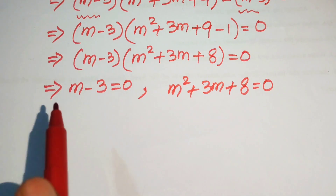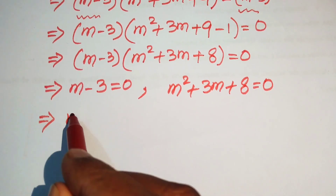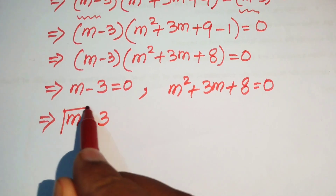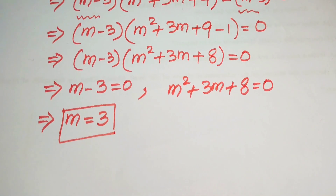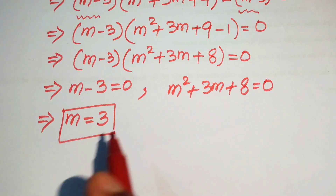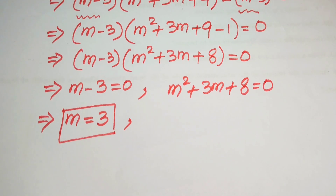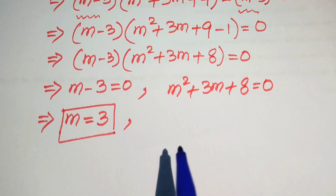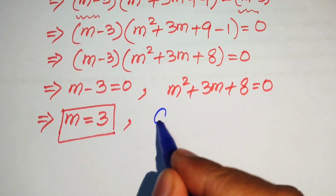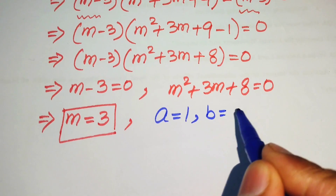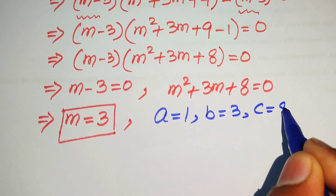From the first case, we easily get the first root of the given equation: m equals to 3. This is the first real root of the given equation. To find the other roots, we need to solve the quadratic equation m squared plus 3m plus 8 equals to 0 using the quadratic formula. The coefficients are a equals to 1, b equals to 3, and c equals to 8.